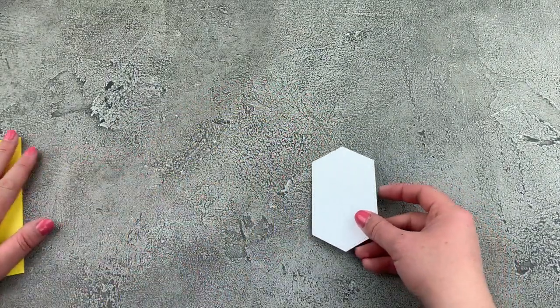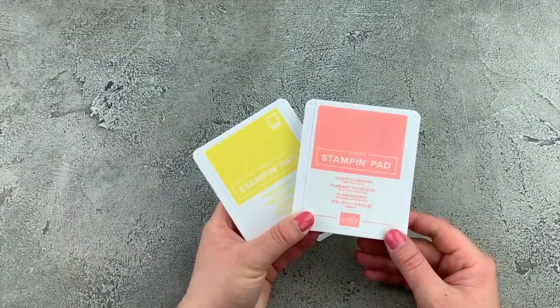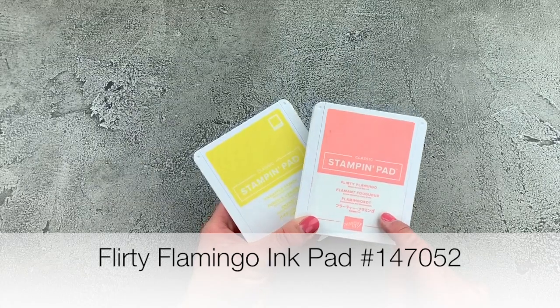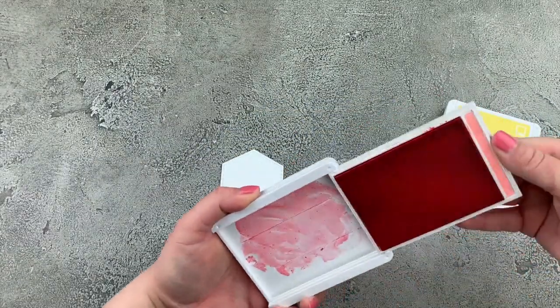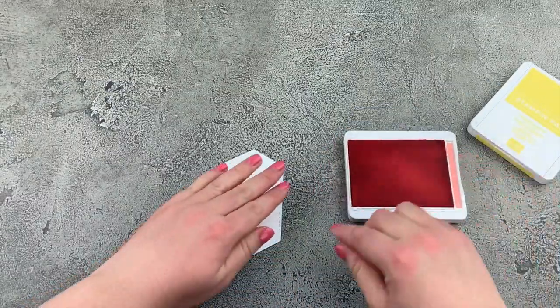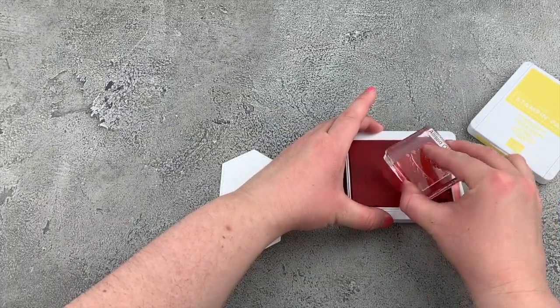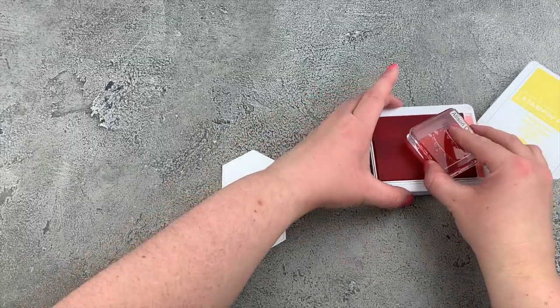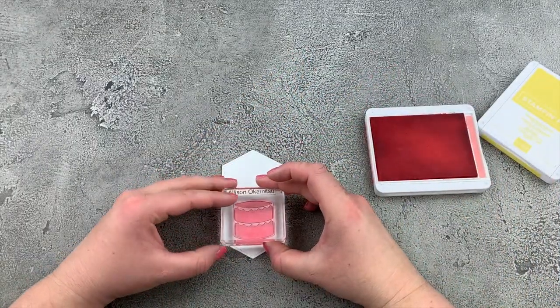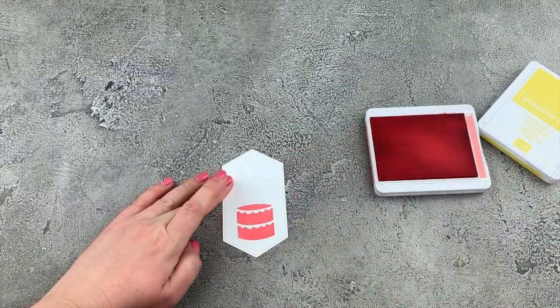So let's go ahead and stamp onto this piece first. I'll be using my flirty flamingo ink pod and my pineapple punch ink pod. We'll start out with flirty flamingo. And I'm just going to take my cake stamp. We'll ink that up and we'll stamp our cake right onto our die cut piece. There we go.